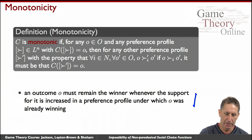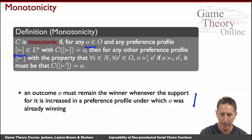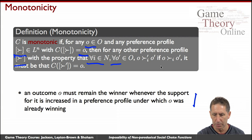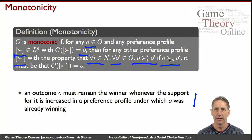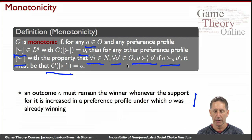Formally, we'll say that the social choice function is monotonic if, for any candidate O and any preference profile under which O is selected, if we look at any other preference profile where for every agent and every other outcome O', whenever O was preferred to O' under the original preference it is also preferred under the new preference — meaning the original winner O never lost support, maybe only gained support — then under those conditions O would still be the social choice, the winner.